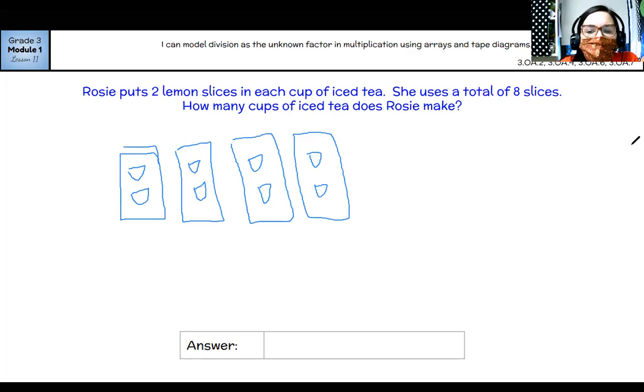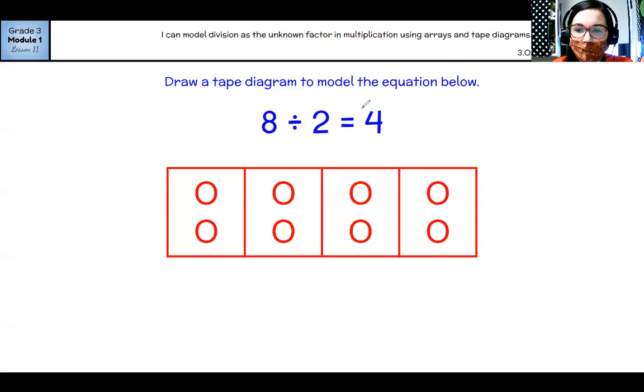All right. So let's think about what kind of problem I just did here. So I knew there were a total of eight slices. And I knew that I had to put two in each cup. So how many cups did I need? One, two, three, four. So eight divided by two equals four.